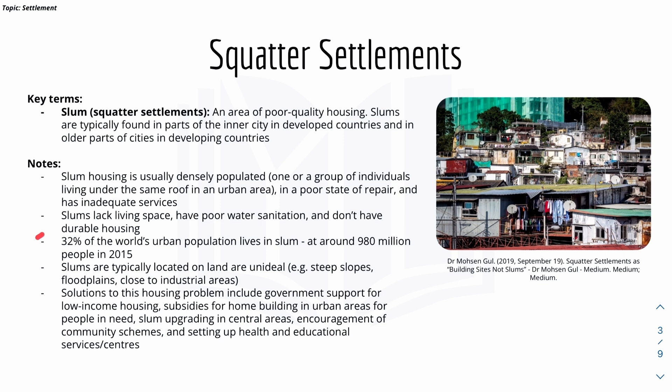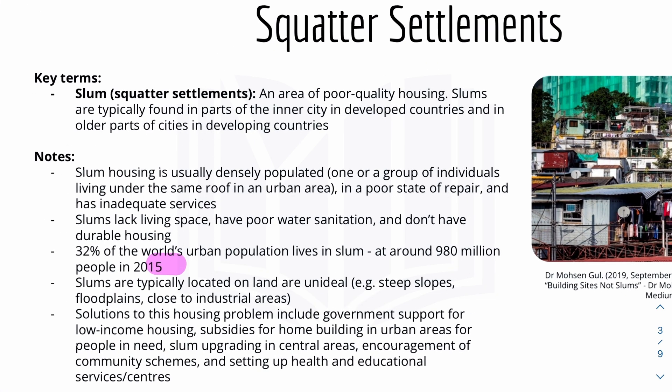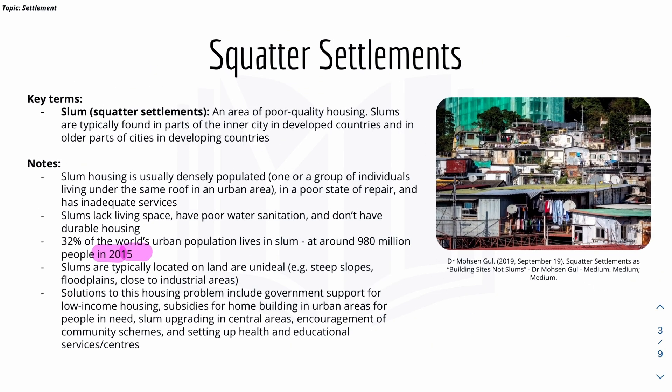Here are some statistics: 32% of the world's urban population lives in slums, at around 980 million people in 2015. Slums are typically located on land that is unideal, for example steep slopes and flood plains. Because if the land were ideal — flat and not easily flooded — then better housing, high-rise buildings, or offices would have been built on it already.